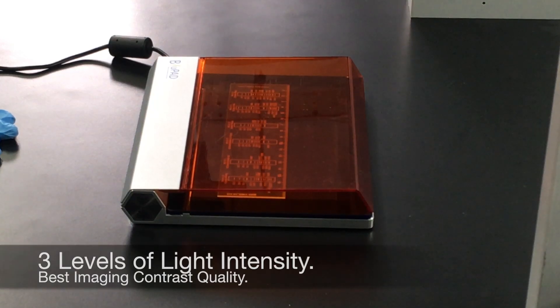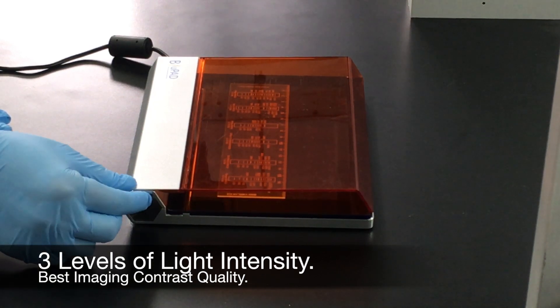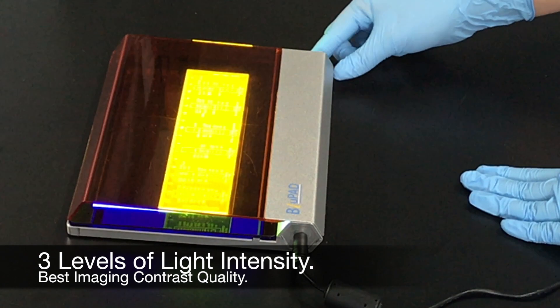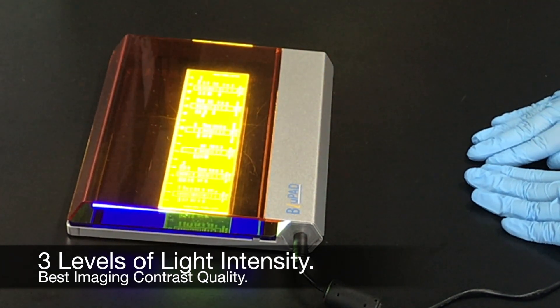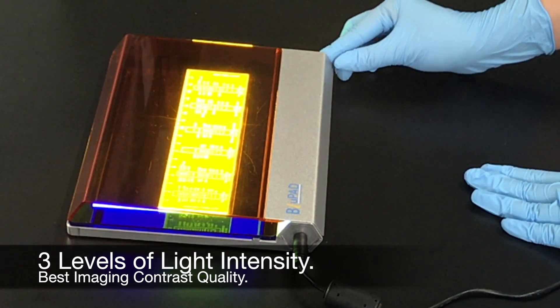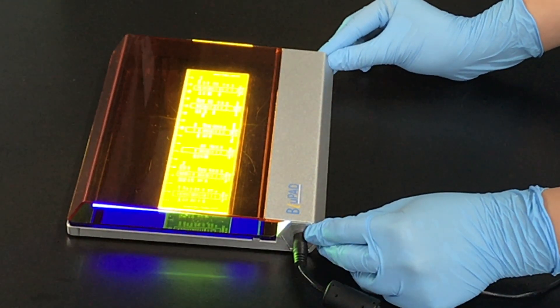The compact illumination base features a light adjustment function with three levels of intensity: low, medium and high. Further, an automatic five minutes light-off safety feature prevents the system from being overheated.